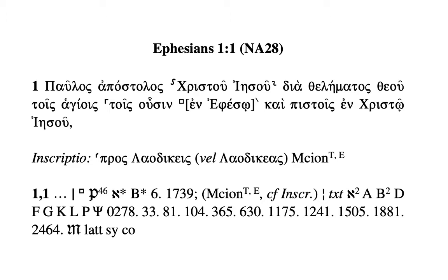The first thing to notice about 'en Ephesō' is that it's surrounded by a few different symbols. The square and the backslash are actually related to one another — they surround a phrase or more than one word that has been omitted in some witnesses. If you ever get the omission of just one word, it'll be a small circle rather than a square. The square is always followed by the backslash to show what words are in question for a possible omission.